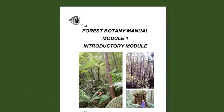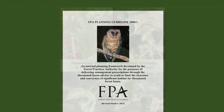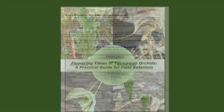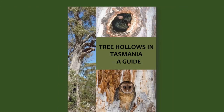You can also access the forest botany manual used to classify floristic communities, which can be helpful for identifying threatened species habitat. The FPA threatened fauna habitat planning guideline is also here, providing specific information and advice on threatened fauna species at risk from land clearing. There is a guide to the flowering times of Tasmanian orchids, a plant identification kit, an information guide for tree hollows and more. Take time to explore these resources.